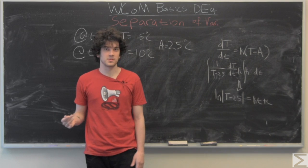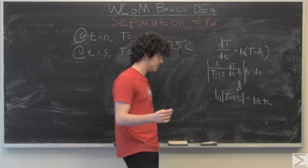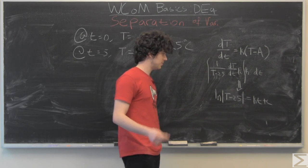So the atmosphere is going to be treated as a constant. So we have ln of T minus 25 is equal to KT plus C.